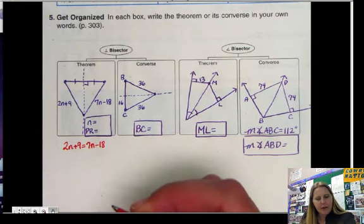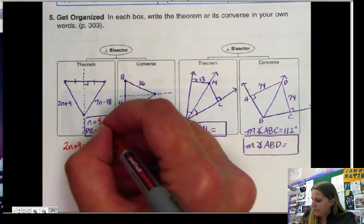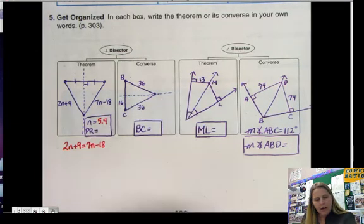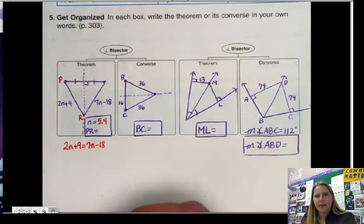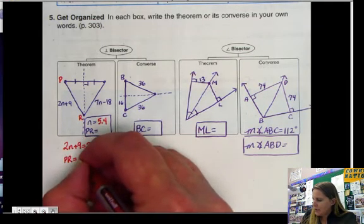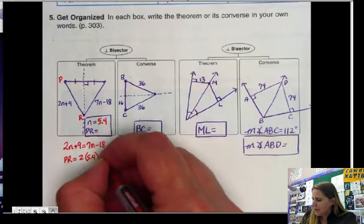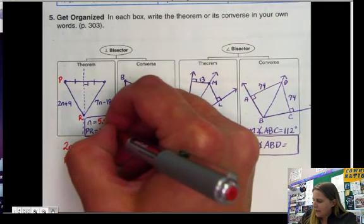And if I solve for N, I get N equals 5.4. And if I say that I want to find PR, I forgot to put those in, so I want to find PR. So PR equals 2 times 5.4 plus 9, and that ends up being 19.8.